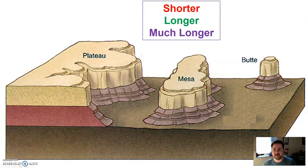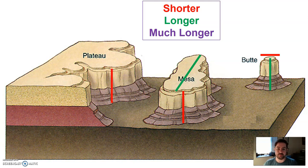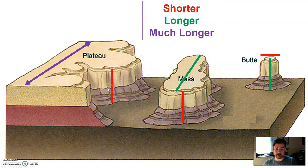To recap: for a butte, the width is the shorter dimension and the height is the longer dimension. For a mesa, the height is the shorter dimension and the width is the longer dimension. For a plateau, the height is the shorter dimension and the width is much, much longer. They can all be the same height and found in the same area — you're just comparing height to width.